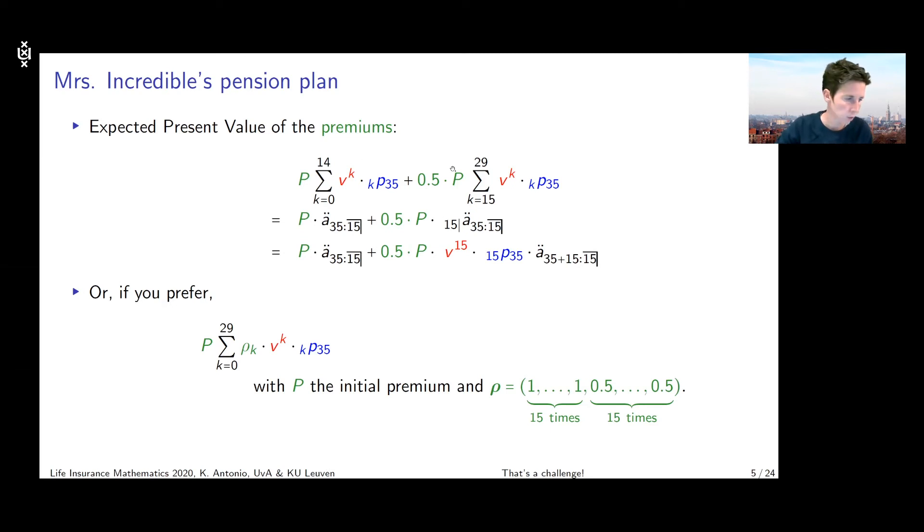So when we jump to the actuarial equivalents, if we write that down, we can first look into the EPV of the premiums. And the way how I did it here in the first line is by using summation formulas. So I know that I'm going to value these premiums using the valuation principles of life annuities. I know that I've got the first payment at time zero and I've got the last payment premium payment at time 29. And you see that I break it up here in two sums because in the first summation, the premium is P. In the next summation, I've got 50% of P. And I'm using here, of course, my financial discounting factor.